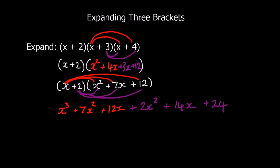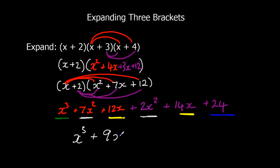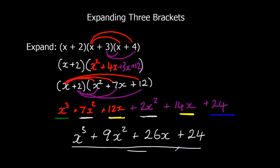Now we just need to collect the like terms and we're finished. We've got just one x cubed term, two x squared terms, two x terms, and a 24 by itself. Simplifying: x cubed, 7x squared plus 2x squared is 9x squared, 12x plus 14x is 26x, and 24. So there we go — we've expanded three brackets.